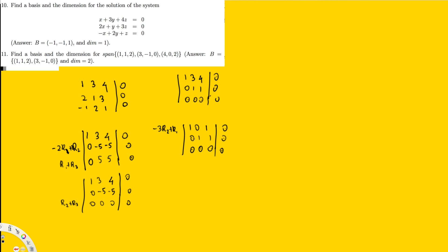We've now reached reduced row echelon form, where values below and above each pivot are 0. The third column has no pivot, so that variable is the free variable. Labeling the variables x, y, z, we have z as the free variable. We express all answers in terms of z. The first equation gives x + z = 0, and the second gives y + z = 0.